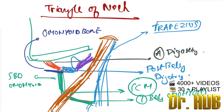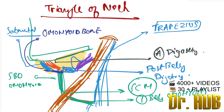Next, there is the submental triangle. Let's look at the triangles — the space here will be the submental triangle. Next we will look at the submandibular triangle, which is below the mandible. Let's highlight it so it's easier to see — this space will be the submandibular triangle.